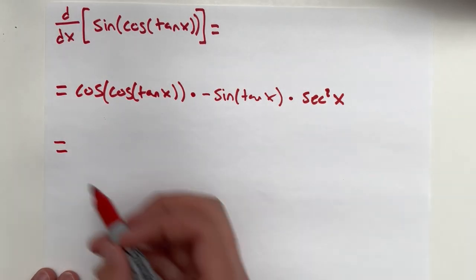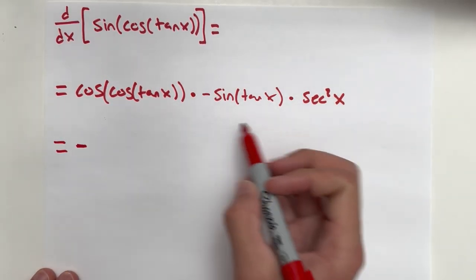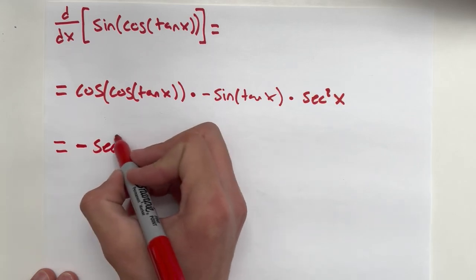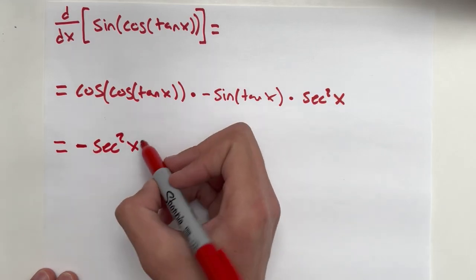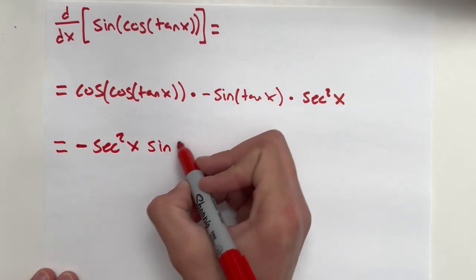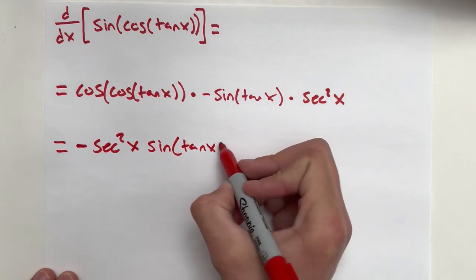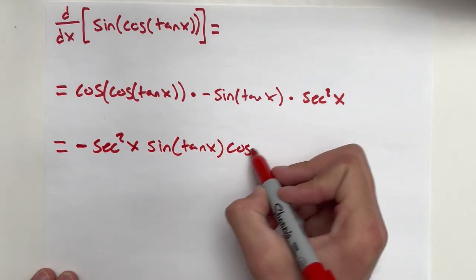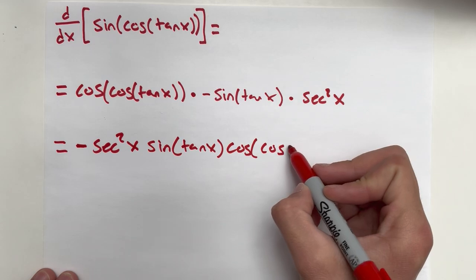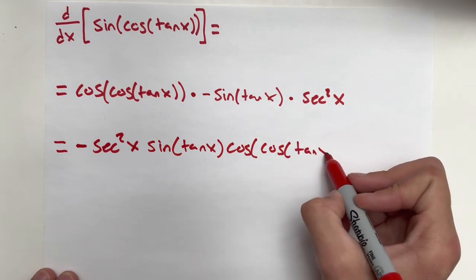So that's all the calculus there. So now we can kind of clean it up. So negative, put the negative up front. Negative secant squared x, sine tangent x, cosine, cosine, tangent x.